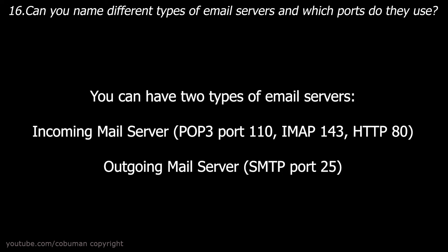Question number sixteen: Can you name different types of email servers and which ports do they use? You can have two types of email servers. Incoming mail servers include POP3 on port 110, IMAP on port 143, and HTTP on port 80. You can also have an outgoing mail server, which uses SMTP on port 25.